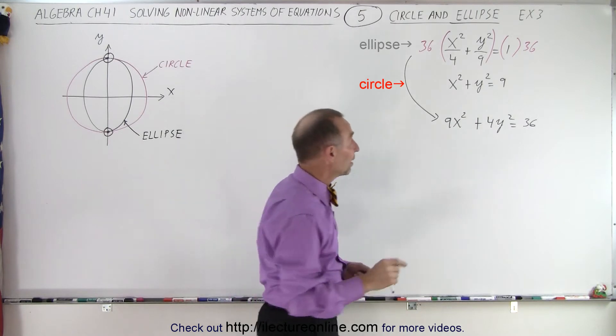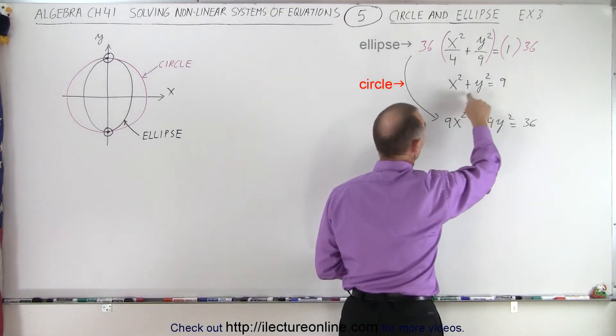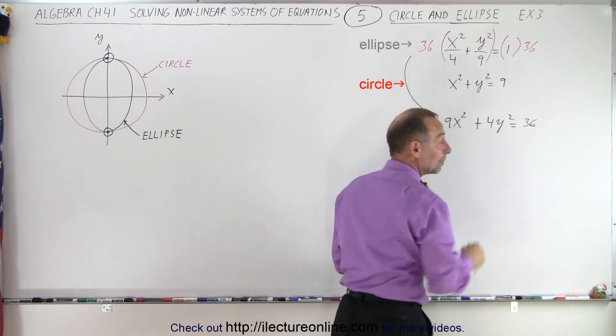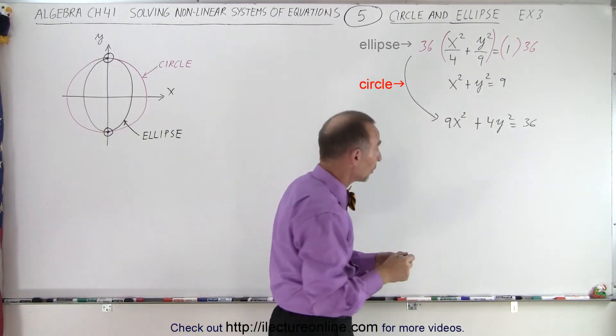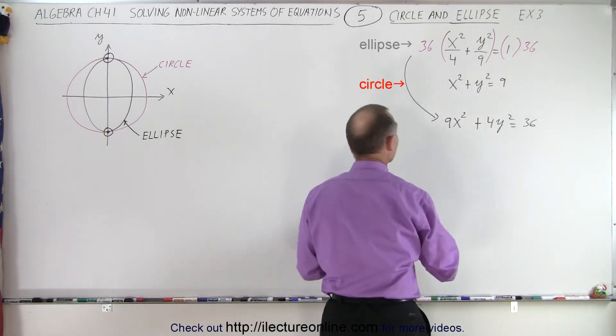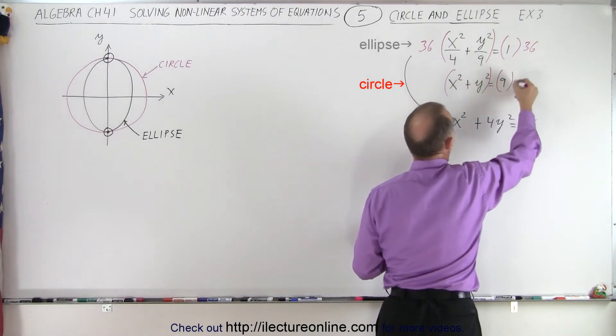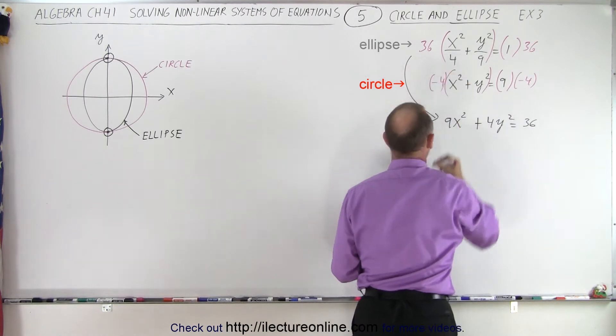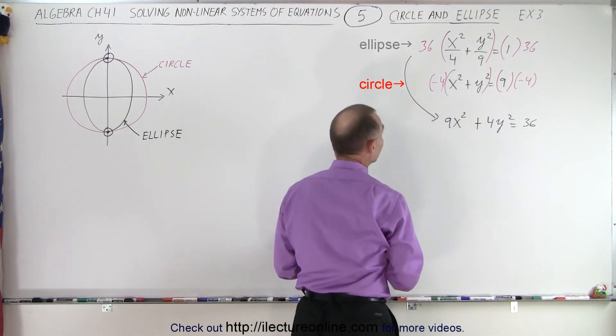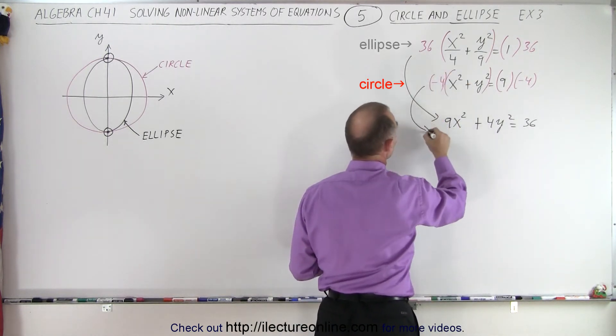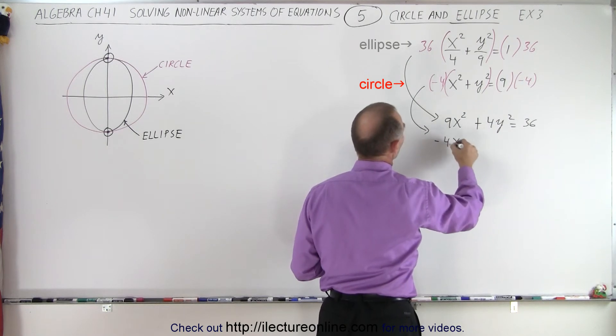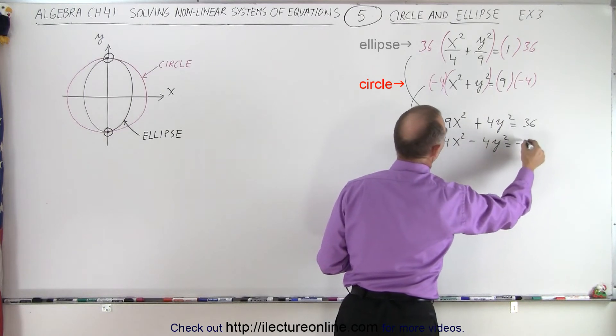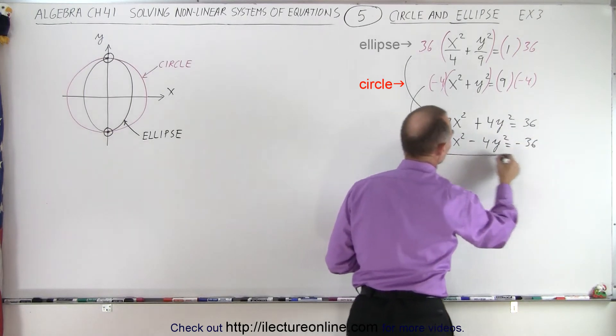So now notice that if we multiply both sides of this equation by negative 4, we'll end up with a negative 4y squared, and we can eliminate the y's by adding the two equations. So I'm going to multiply this side and this side by negative 4, which means this equation turns into minus 4x squared minus 4y squared is equal to minus 36. Now we can add the two together.